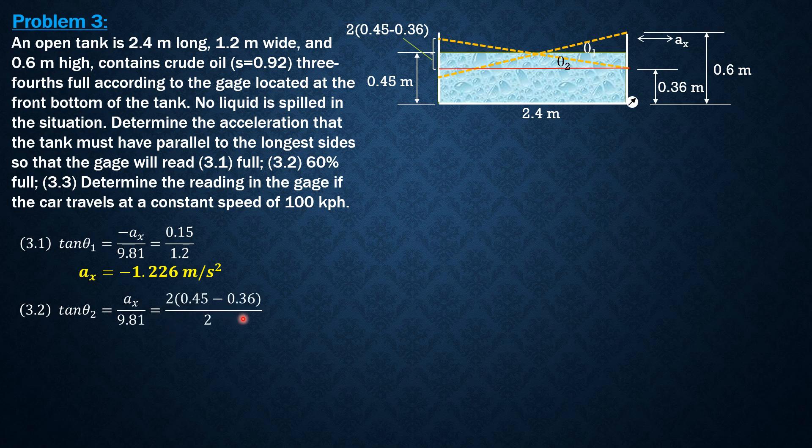So solving for Ax, Ax is equal to 0.7358 meters per second squared. Finally...